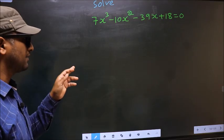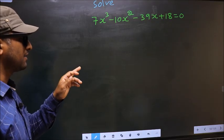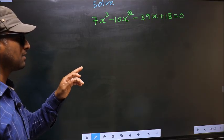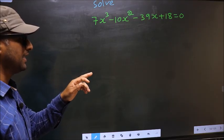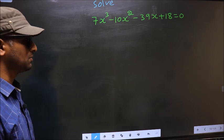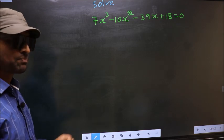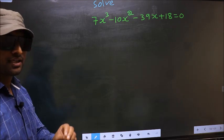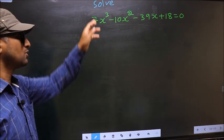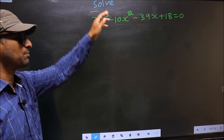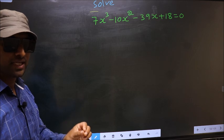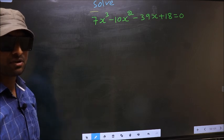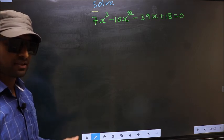Solve 7x³ - 10x² - 39x + 18 = 0. They told us to solve, which means we should get the values of x.